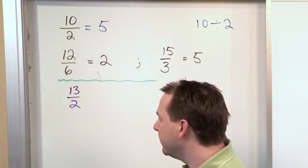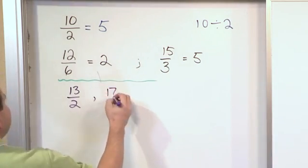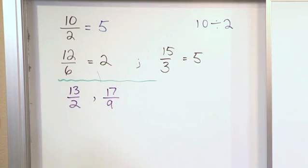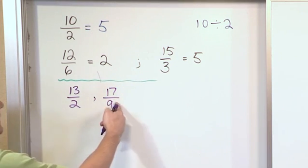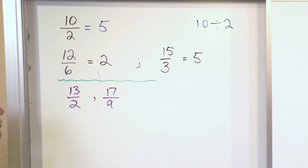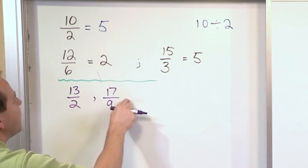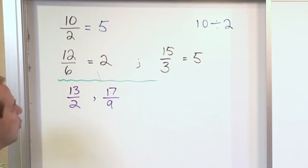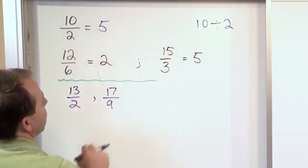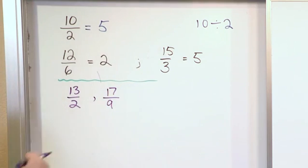What about the fraction 17 ninths? This is an improper fraction. But 9 does not go into 17 an even number of times, so I can leave it as an improper fraction in my calculations or I can convert it to a mixed fraction, we've done that before. But in any case, we can't do a division like these problems because it doesn't divide evenly.